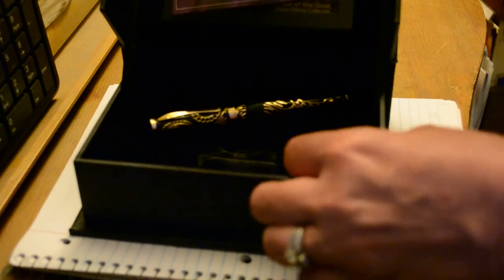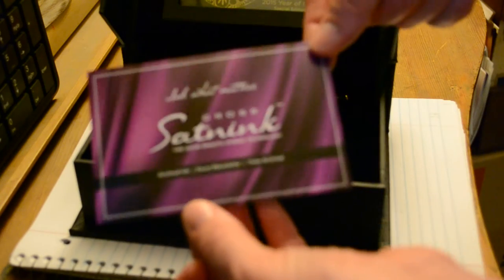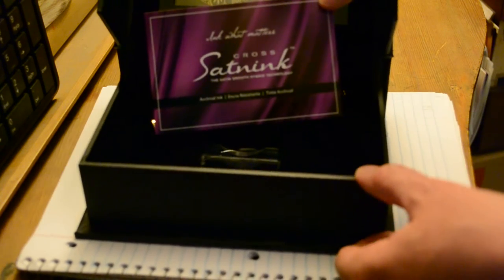When you open that really thick lid you can take a look inside. It has the pamphlet in the back for the 2015 Year of the Goat fountain pen, and then you'll also see a little ad for their ink that they have. Satin ink I'm gonna guess.